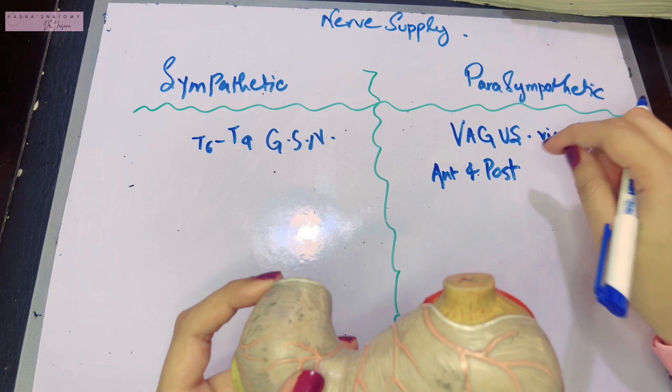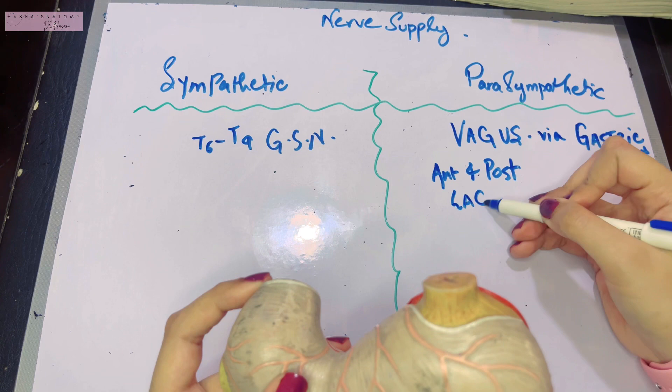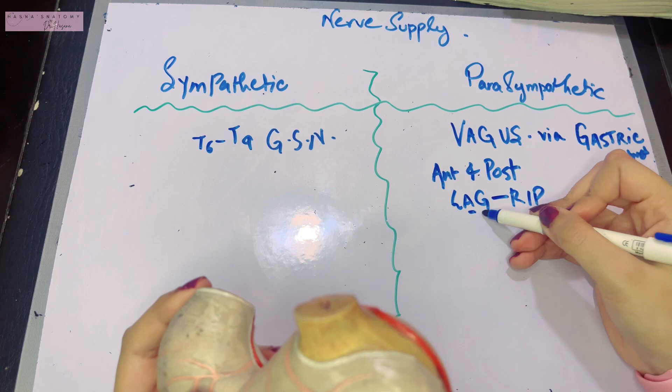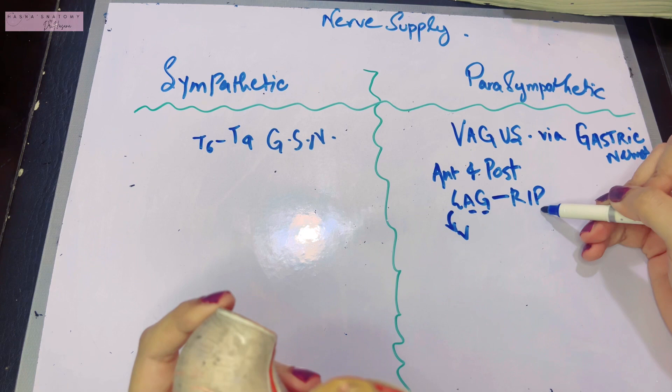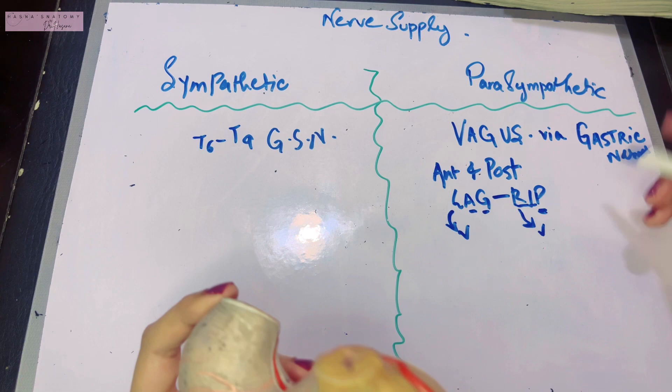Here I want you to focus and remember this part very well. The mnemonic goes like LAG and RIP. The anterior gastric nerve has the left vagal fibers whereas the posterior gastric nerve has the right vagal fibers. I hope that makes sense and you remember that very well.